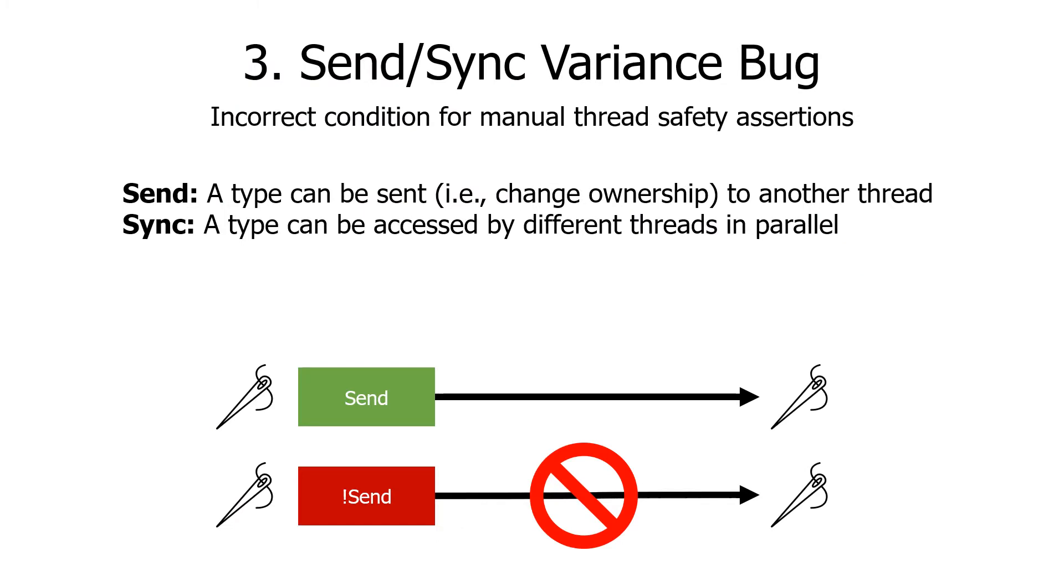The last bug pattern is send-sync variance bug, which is caused by specifying incorrect conditions when manually asserting thread safety of a generic type. Rust thread safety is governed by two traits: Send and Sync. The Send trait is implemented on a type that can be sent across threads. The Sync trait is implemented on a type that can be accessed by different threads in parallel.